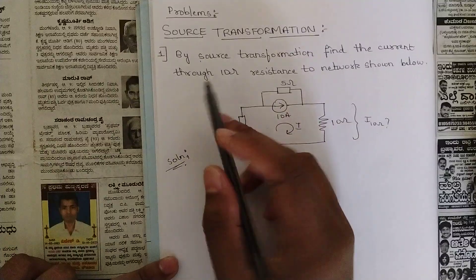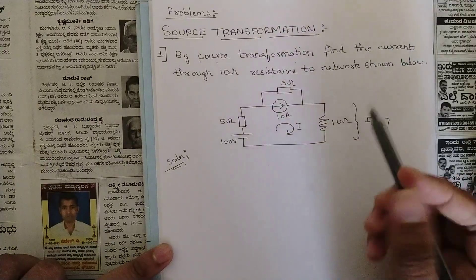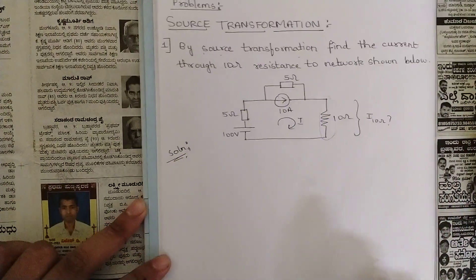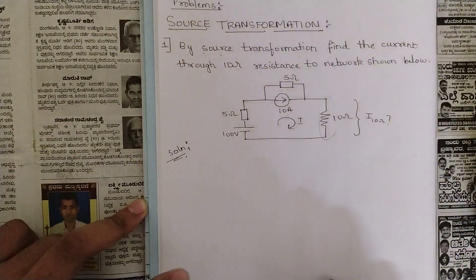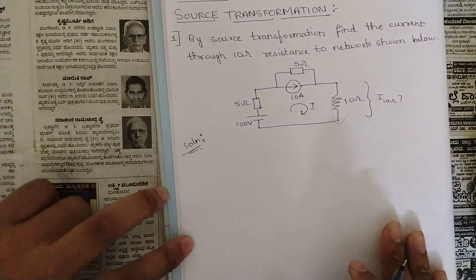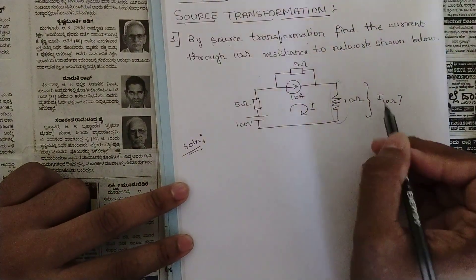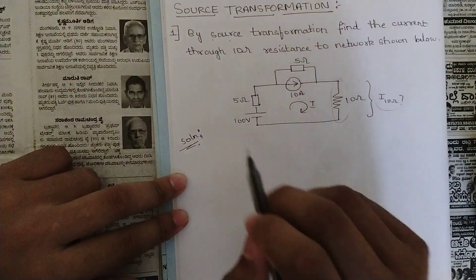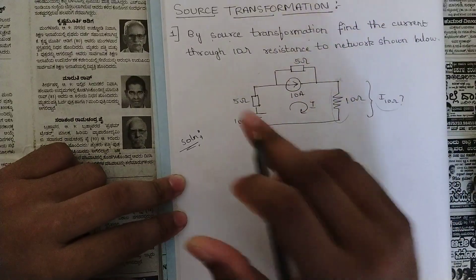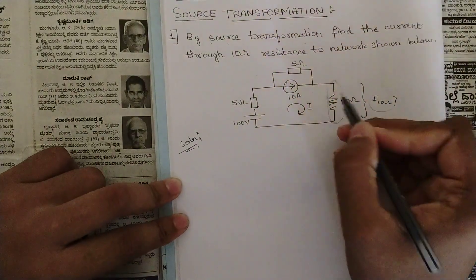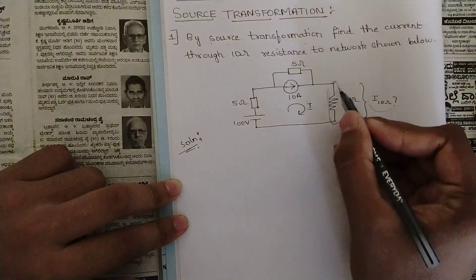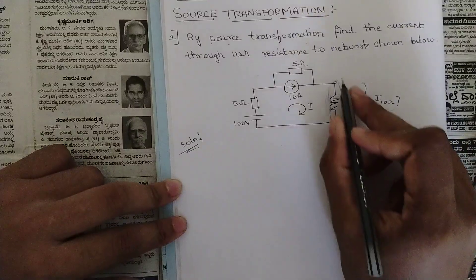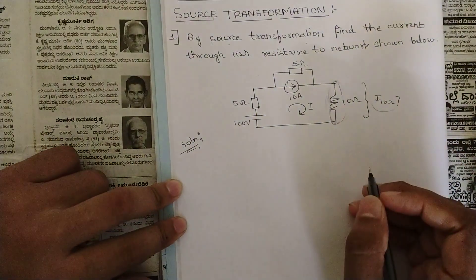Starting from today's session, we are going to solve one simple problem related to source transformation. The problem is: by source transformation, find the current through the 10 ohm resistance in the network shown. Our goal is to find I subscript 10 ohm. We should analyze the circuit and see how to simplify it. One important thing to keep in mind: this 10 ohm resistance should remain in the circuit till the last step — you cannot reduce it by taking equivalent resistance in series or parallel.